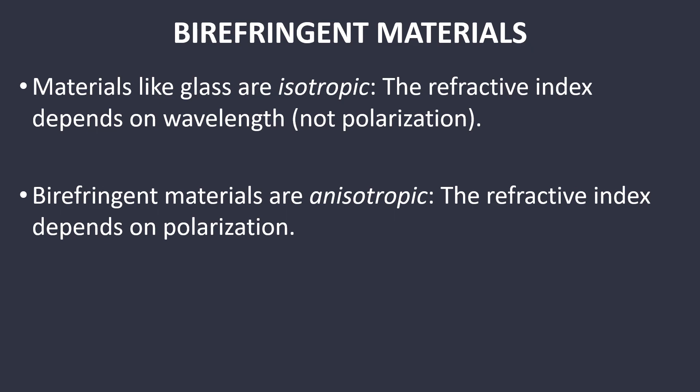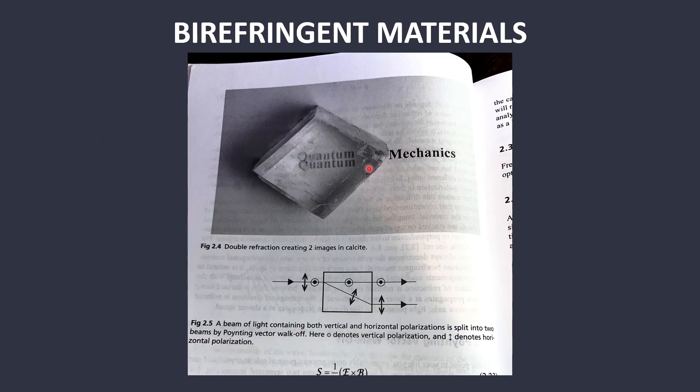Birefringent materials are anisotropic, meaning that the refractive index does depend upon polarization. Different polarizations of light will travel in different paths. An example here is in this image where you can see that the light is being split along two different paths. The light has components of horizontal and vertical polarization. The vertical polarization travels straight, where the horizontal polarization travels along a different path, and so it's then split.